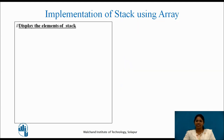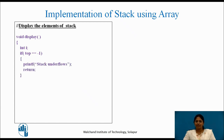Finally, we display the elements of the stack. First, declare a variable i. Before displaying any elements, check whether the stack has underflown — if top is pointing to minus 1, the stack is empty and we return to main. Else, if the stack has not underflown, we use a for loop to display the elements of the stack. This is how we implement stack using array using C programming.